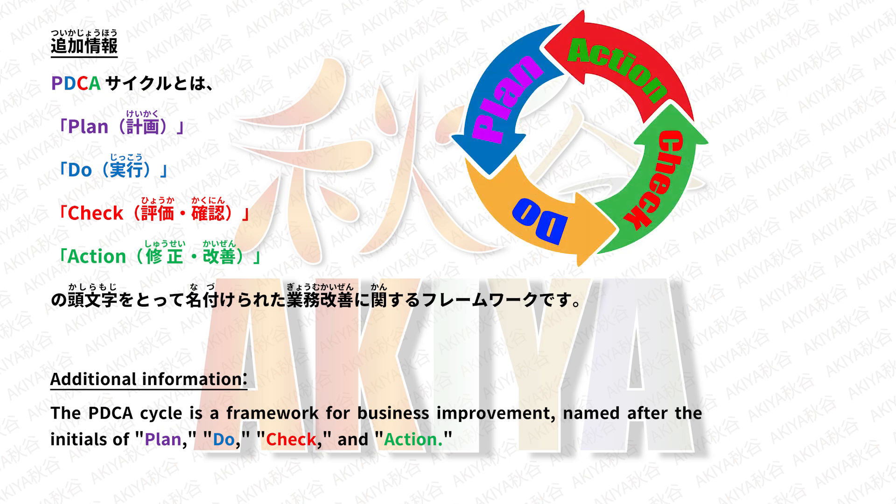PDCAサイクルとは、Plan（計画）、Do（実行）、Check（評価・確認）、Action（修正・改善）の頭文字を取って名付けられた、業務改善に関するフレームワークです。